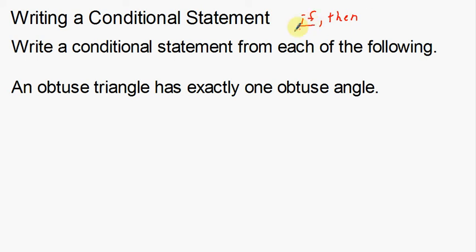The if part is going to be underlined with a single line, and the then part is underlined with a double line. This will show you where the if part — the hypothesis of a conditional statement — is, and also where the then part — the conclusion — is.